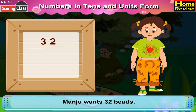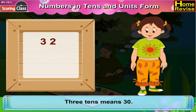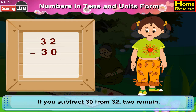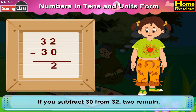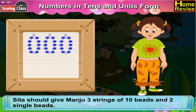As you know, 3 tenths means 30. So, if you subtract 30 from 32, 2 remains. Which means, Sita should give Manju 3 strings of 10 beads and 2 single beads.